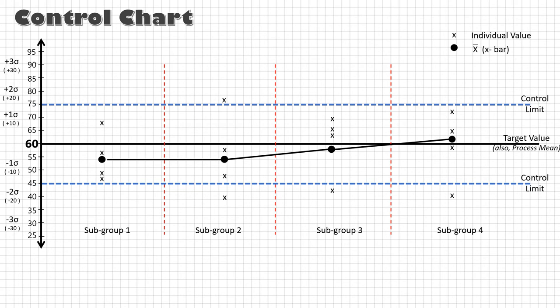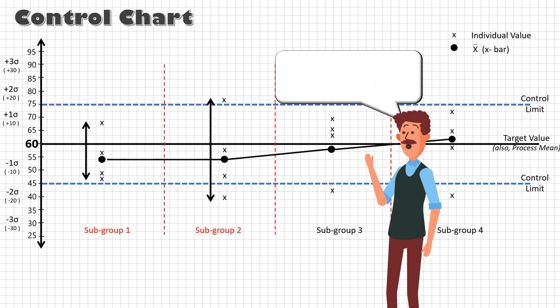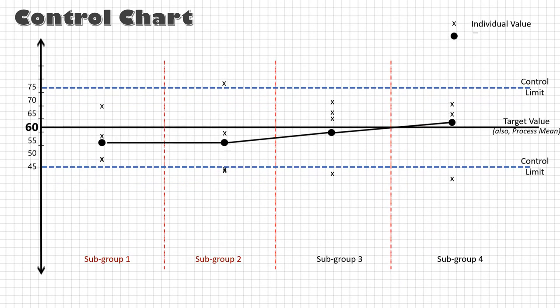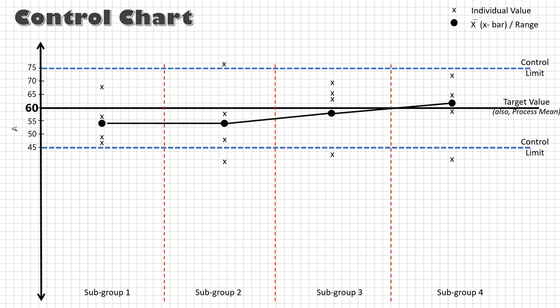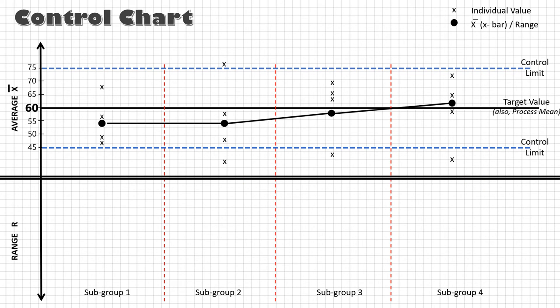But there is a problem—we are only monitoring the location shift. Consider these two samples: though the X-bar is the same, these two samples have fairly different ranges. So in addition to monitoring the X-bar, we should also be monitoring the range.